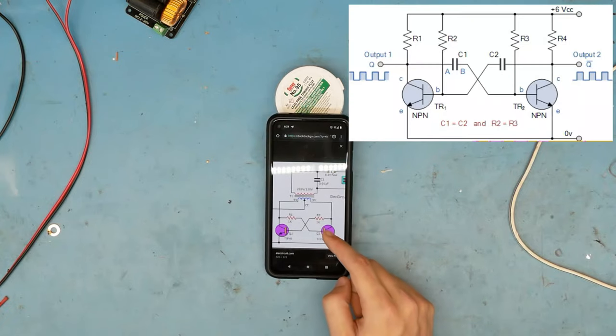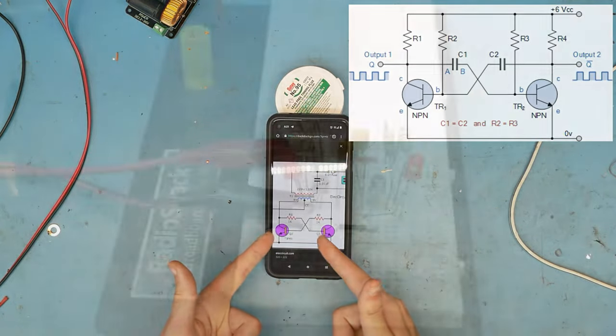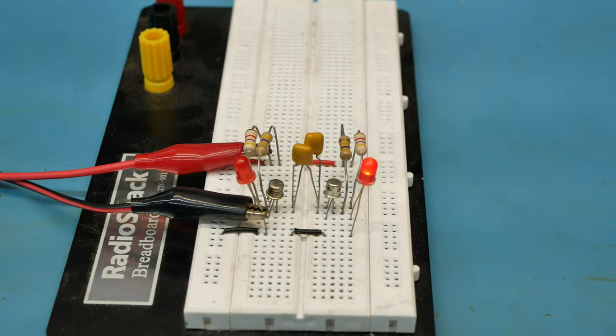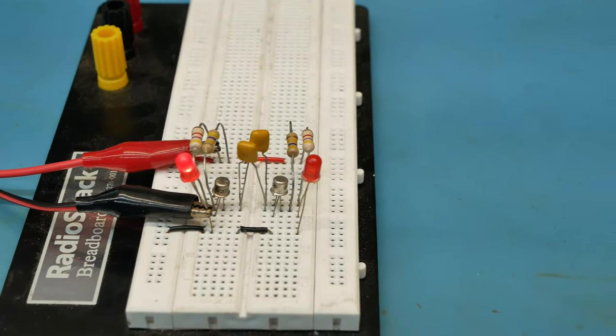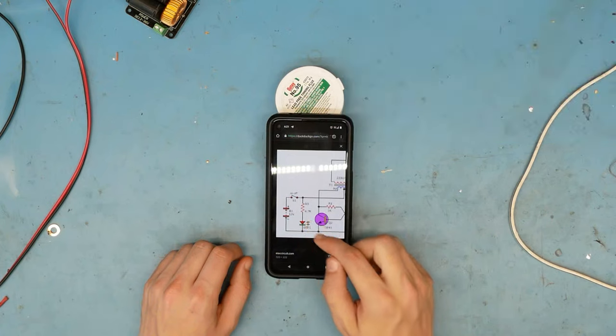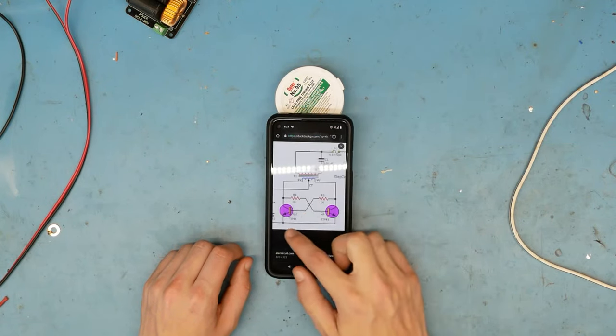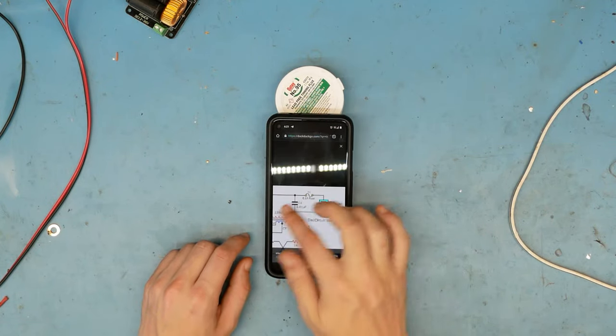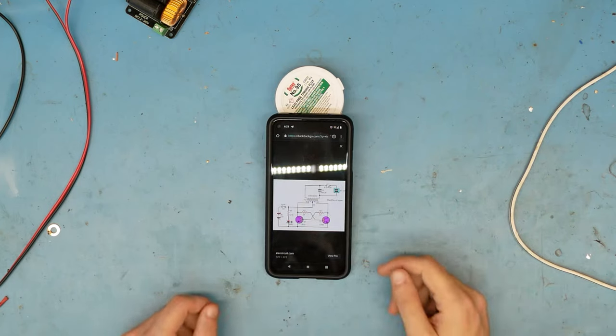Basically it just sets up this astable multivibrator type circuit. You've probably seen a very similar circuit like this with the wig-wag flashing LEDs, except in this case we use a transformer and we provide the DC through the center tap. Of course the emitters are connected to ground, and you get your output. Seems pretty simple. Let's build this one first.